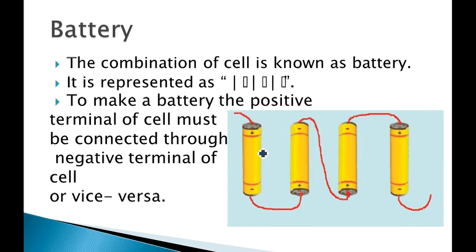In this representation you can see a positive terminal and a negative terminal. The negative terminal of one cell is connected to the positive terminal of another cell. That is how we make a battery. If you connect plus to plus, the battery will not be formed and working conditions will not be met.